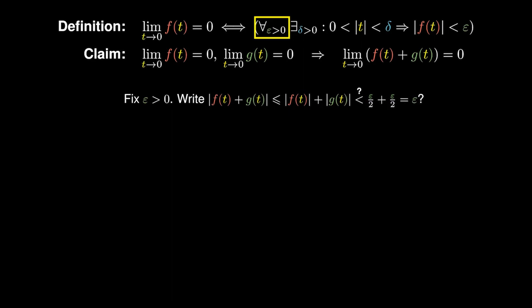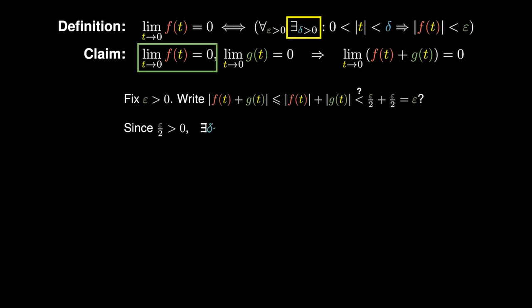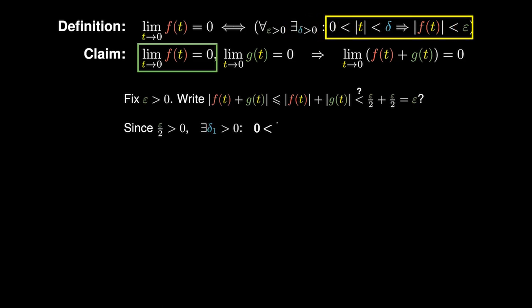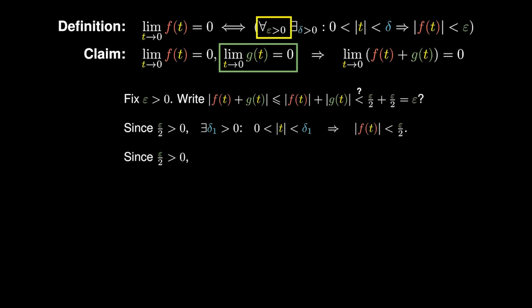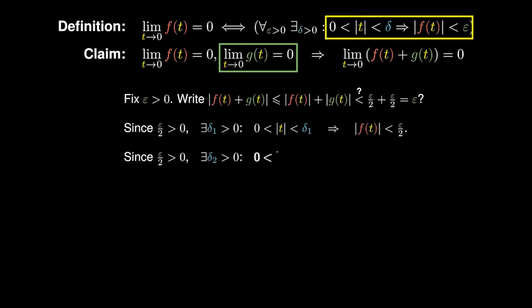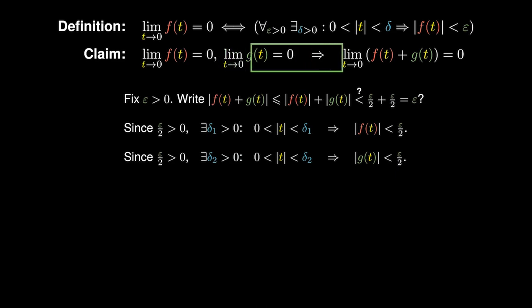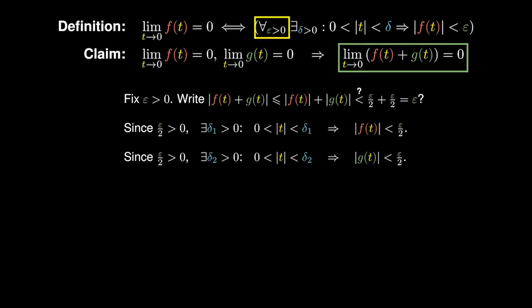Since the limit of f at zero is zero, and epsilon over two is a positive number, we can find an input threshold delta one such that when the inputs are constrained by delta one, |f| is upper bounded by epsilon over two. Since the limit of g at zero is zero as well, and epsilon over two is positive, we can find an input threshold delta two such that when the inputs are constrained by delta two, the outputs are constrained by epsilon over two. We choose delta to be the smaller of delta one and delta two.